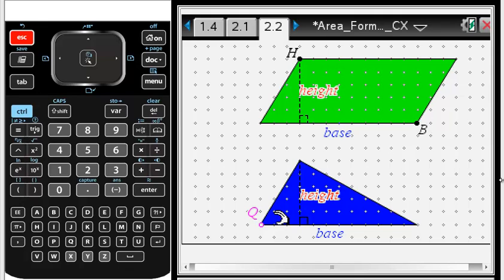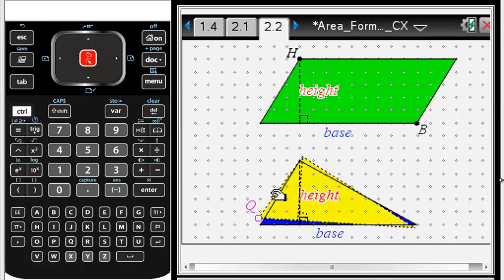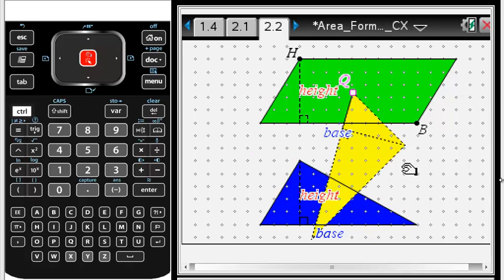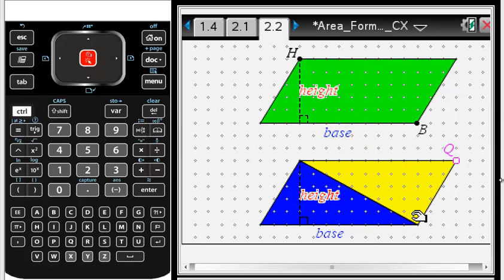This time you'll go down to the pink point at Q. Control click. This time make a frown, pull it up and over and as you can see the two triangles make up the same area as a parallelogram. A parallelogram is base times height so the triangle is one half base times height. That's what they should discover.